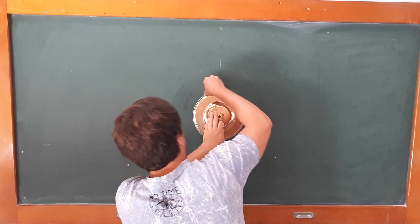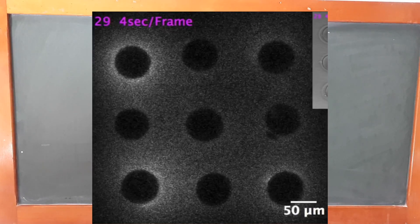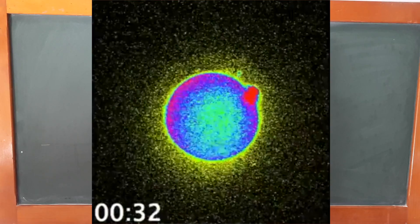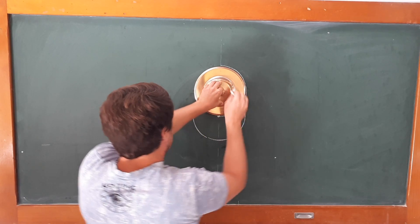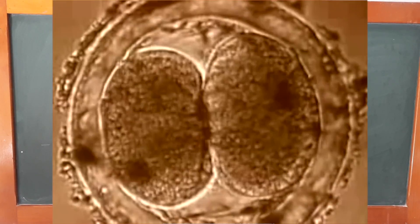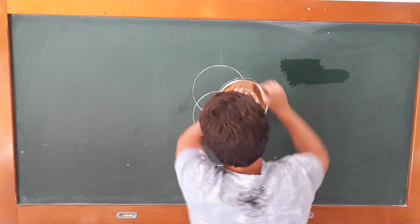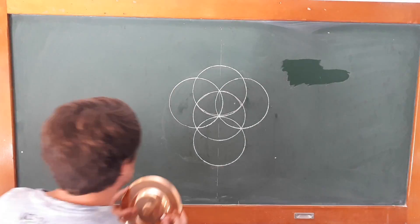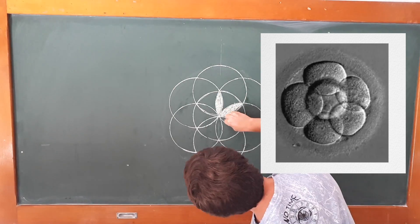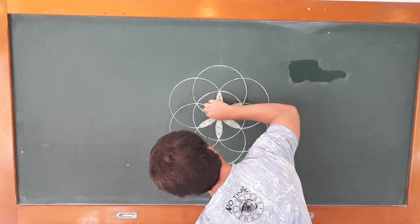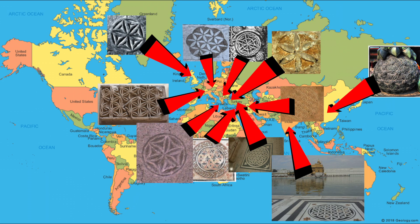Everything starts at a point — an egg, a seed, a big bang, like the flash of light as a sperm enters the ovum. To grow we need to multiply, exactly like cell division, which gives us another circle. If we continue to grow outwards and around we achieve the egg of life, which under a microscope looks like this. On a side note, let's not forget that this complex symbol can be found in ancient texts all over the world.